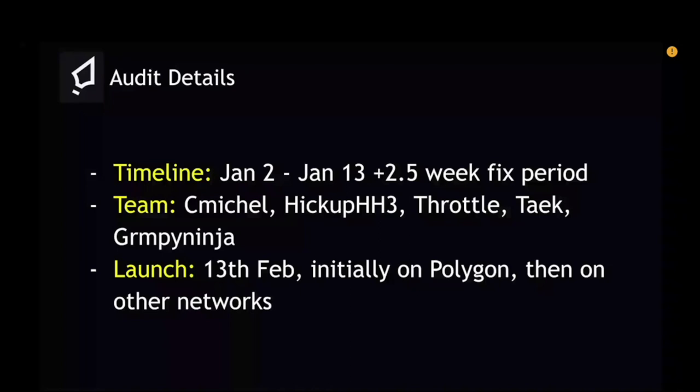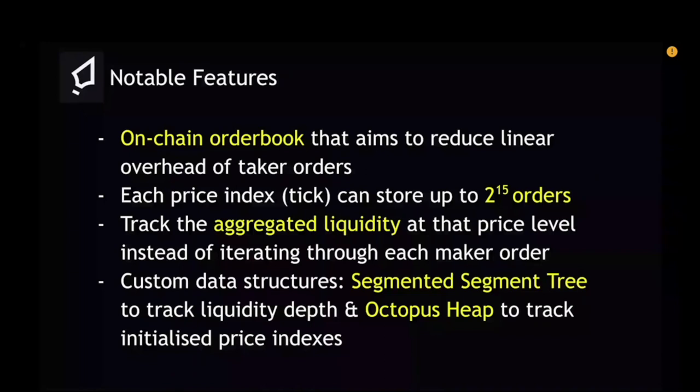What exactly makes Clover stand out from traditional DEXs or on-chain order book models? They aim to reduce the linear overhead of taker orders, because the computation cost of a taker order increases proportionally to the number of maker orders it is matched with. That's the main problem they are tackling — they try to be as gas efficient as possible when a taker comes in to take orders.